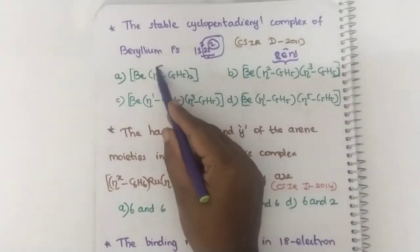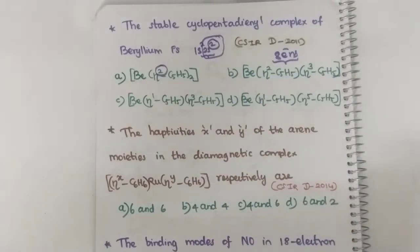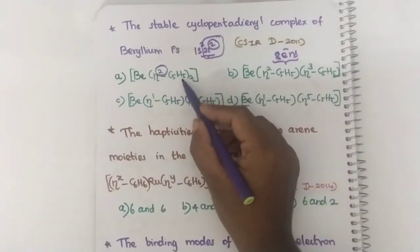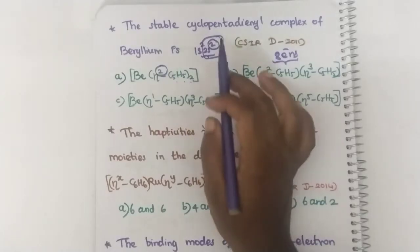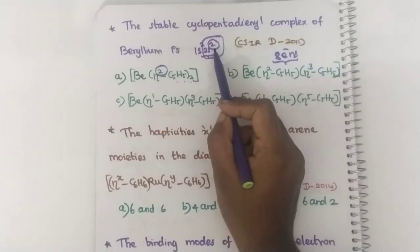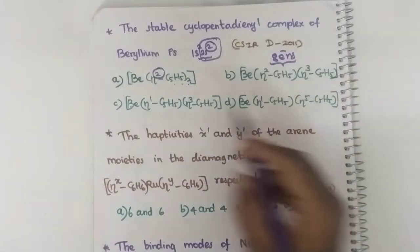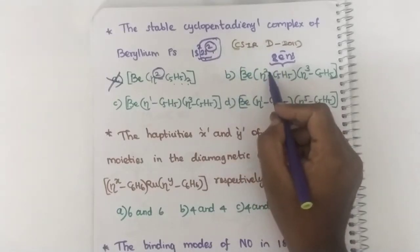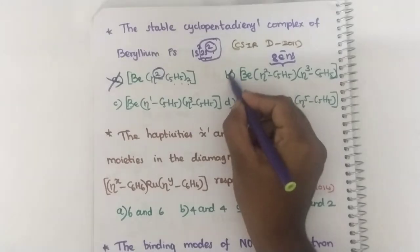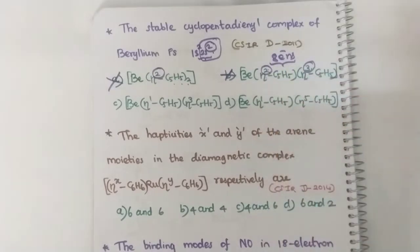So among the options, look for the one where cyclopentadienyl donates 6 electrons. In this case eta² — so 2 electrons, and there are 2 ligands: 2 × 2 = 4. Because one C₅H₅ will donate 2 electrons, two C₅H₅ donate 4 electrons. Already it has 2 valence electrons, so 2 + 4 = 6 — not stable. In the next case, 2 + 2 = 4, 4 + 3 = 7 — also wrong. Eta power anything will donate that many electrons: eta² donates 2 electrons, eta³ donates 3 electrons. In another case eta¹ and eta³, totally 4 electrons: 4 + 2 = 6 — also not stable.